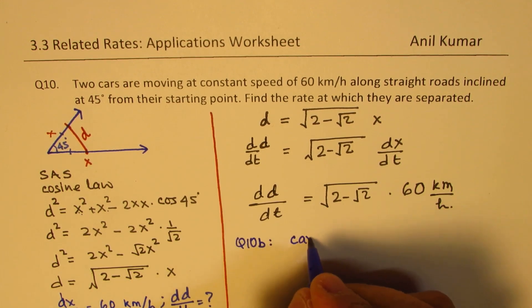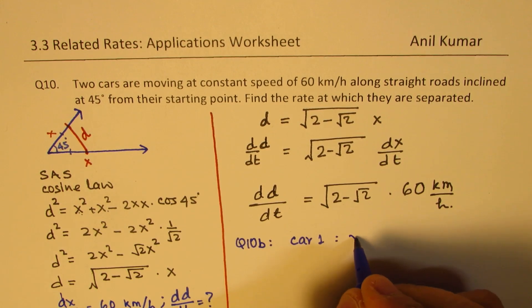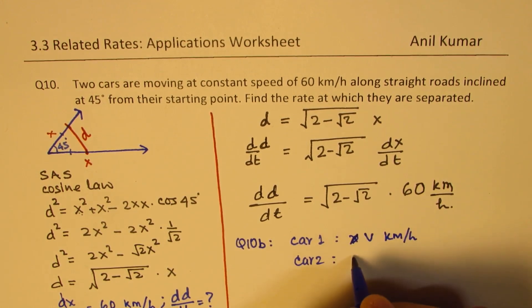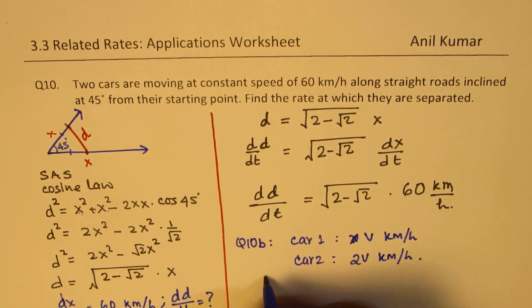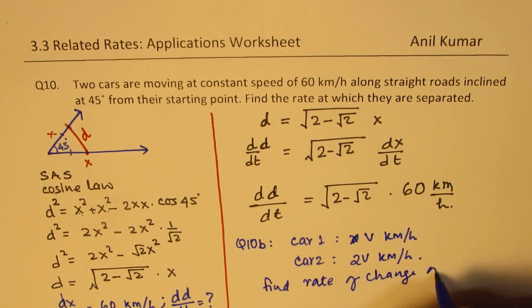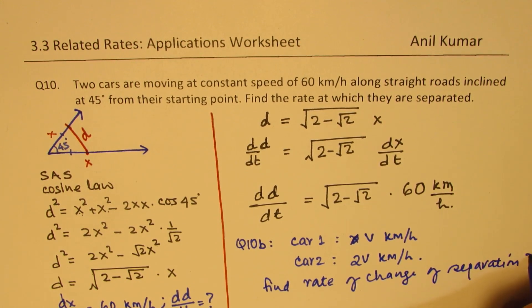So if say car one is going at velocity v kilometers per hour, and car two is twice kilometers per hour, find rate of change of separation. So try this question.